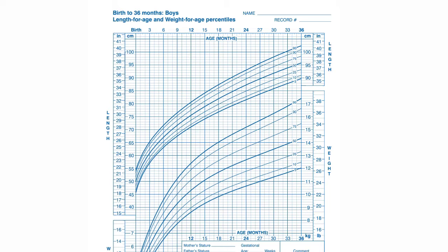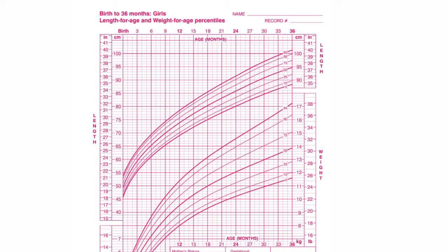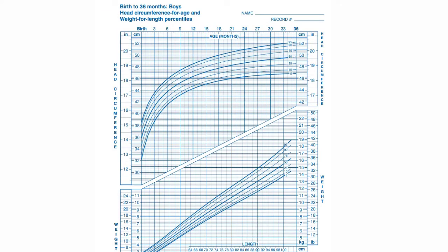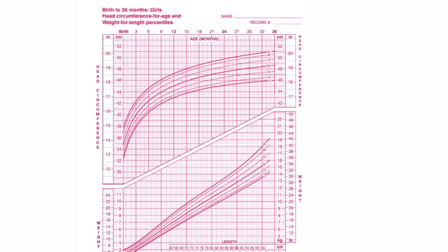Sequential charting is the most important thing — a single chart is not sufficient. The next chart shows birth to 36 months for girls. You can identify it by the pink color coding. It shows length-for-age and weight-for-age, with length and weight on the y-axis and age in months on the x-axis. Another chart covers birth to 36 months for head circumference-for-age, with head circumference on the y-axis and age in months on the x-axis.